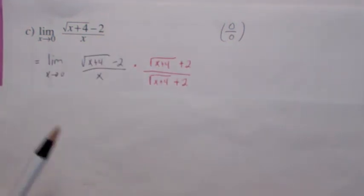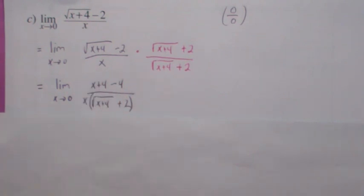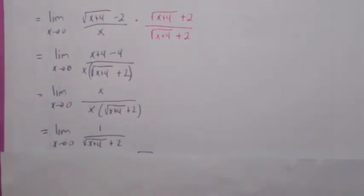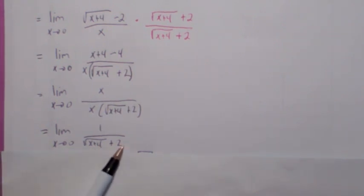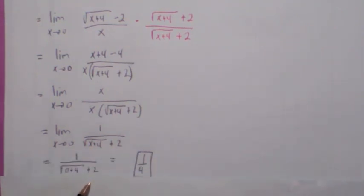When you multiply by the conjugate of the top, you get this. When you multiply it out, you get x plus 4 minus 4 on top, and the bottom you get x times the quantity (square root of x plus 4 plus 2). The 4's cancel, and you can cancel the x's because we don't care what happens when x equals 0. Now we can apply our limit laws. We have a limit law that says you can take the limit of the top over the bottom, provided both limits exist and the bottom limit's not 0. You can pull the limit inside the square root, provided the limit exists and it's greater than 0. What's inside the square root is just getting close to 0 plus 4, so the limit exists and it's greater than 0. You end up with 1 over (square root of 0 plus 4 plus 2), which is 1 fourth.